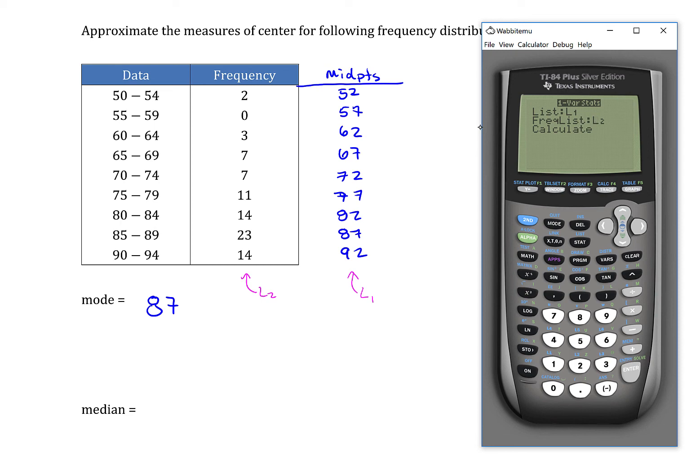If you don't, then hit 2nd. So you should see 1VAR stats on the screen. So then hit 2nd and 1, and that'll put L1 on screen. Then hit a comma, which is right above the 7. And then hit 2nd and 2, and that'll put L2 on the screen. Either way, after you type that in, press Enter to calculate, and it will run the 1VAR stats.